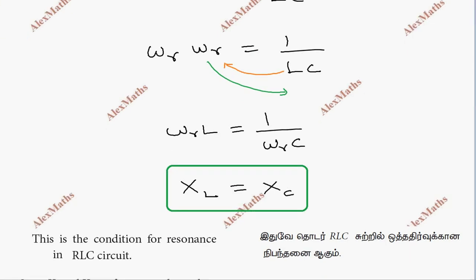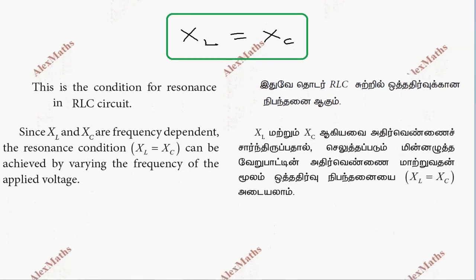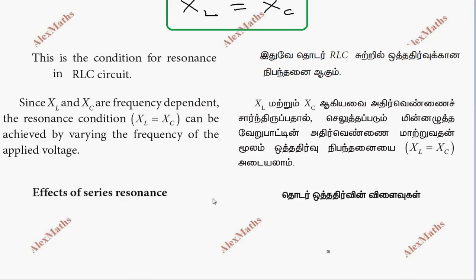XL and XC are frequency dependent. When the frequency of the applied voltage is varied, the resonance condition is reached when XL equals XC.